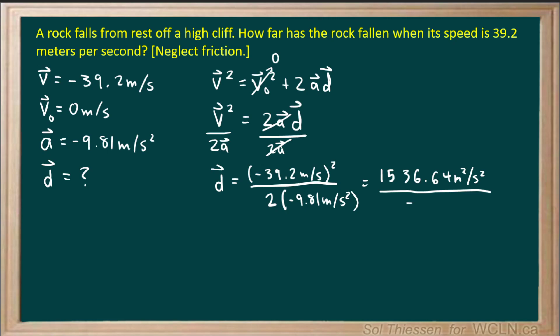Then in the denominator we have two times negative 9.81, which will give us negative 19.62 meters per second squared. Second squared will cancel. We'll be left with a meter in the numerator, and that makes sense because the meter is a unit of displacement.